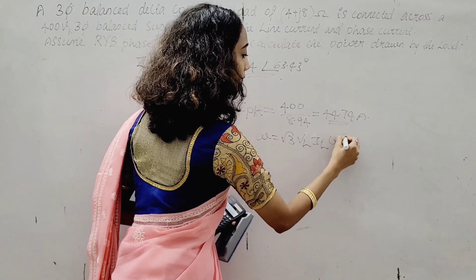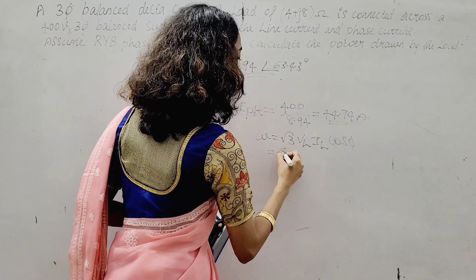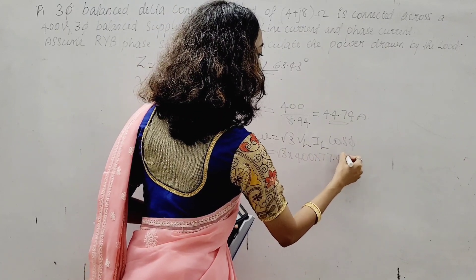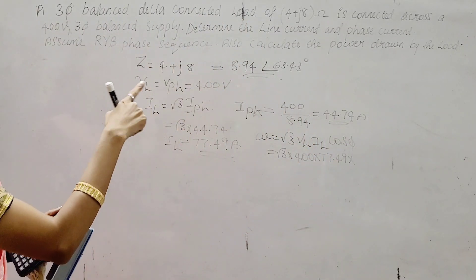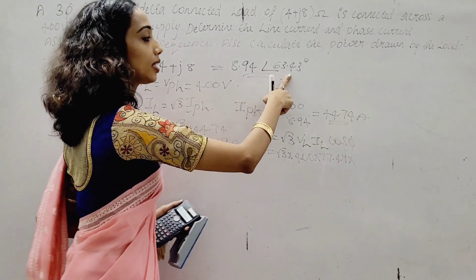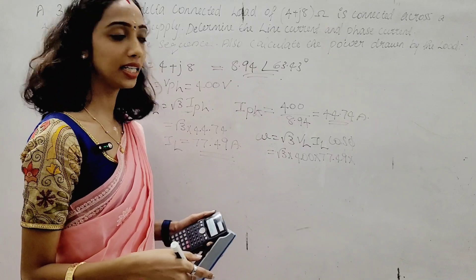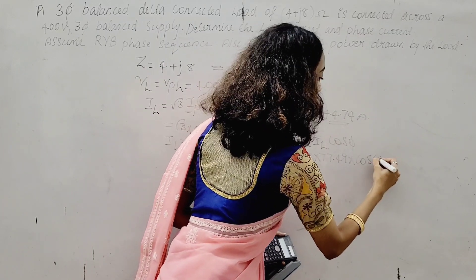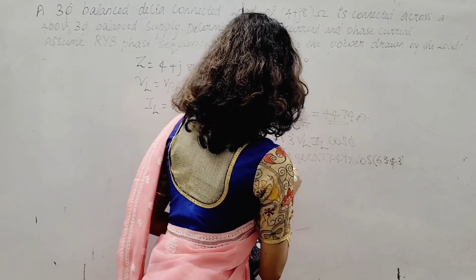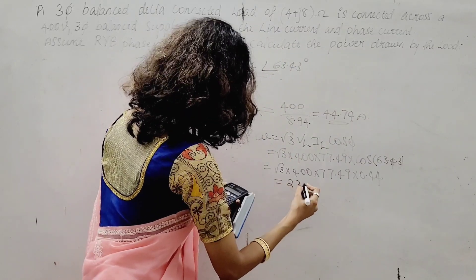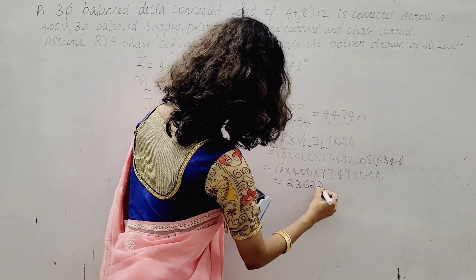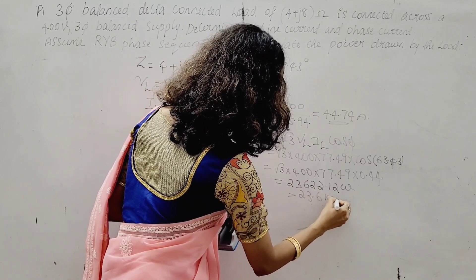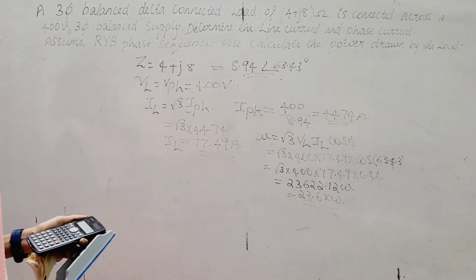Total power W equals root 3 times VL times IL times cos φ. That is root 3 into 400 into 77.49 into cos(63.43°). This gives 23,000 W approximately, that is 23.6 kW total power.